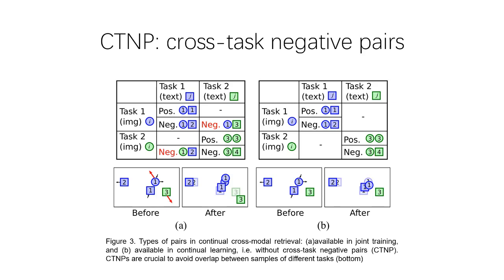In this paper, we also notice what happens at training time. One thing we cannot ignore is cross-task negative pairs, shown in figures A and B. In joint training, we can compose many negative pairs from different tasks. But in continual learning, since we cannot observe previous data, it is impossible to compose cross-task negative pairs, which may be very important in continual learning for cross-modal retrieval. Understanding the role cross-task negative pairs play is a key topic for future focus.